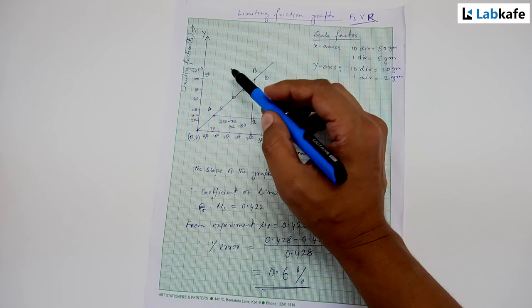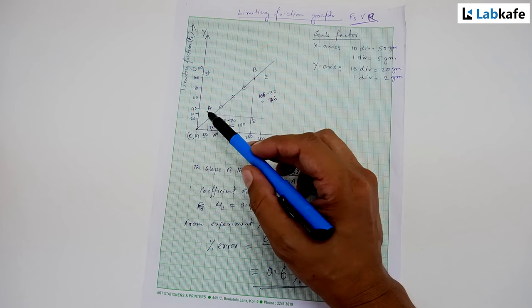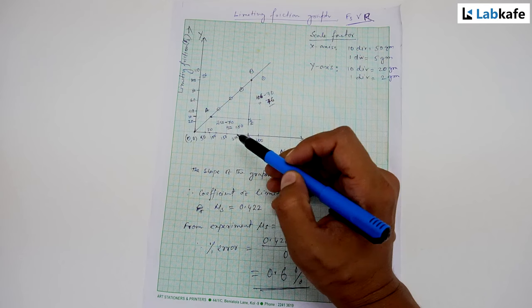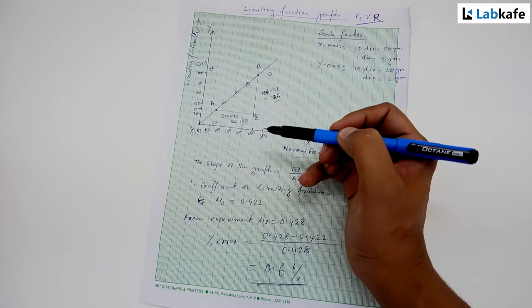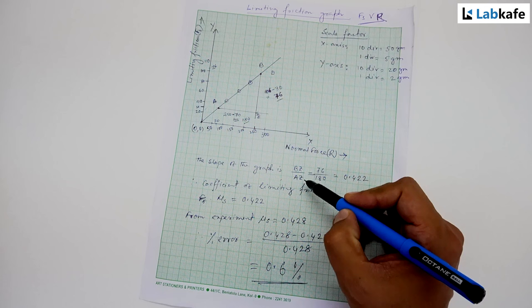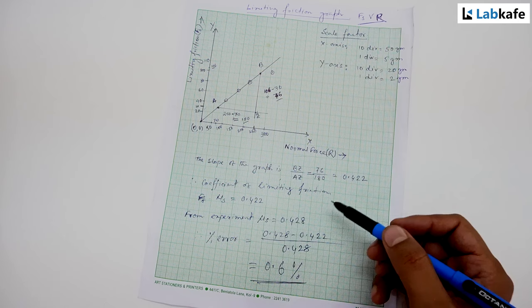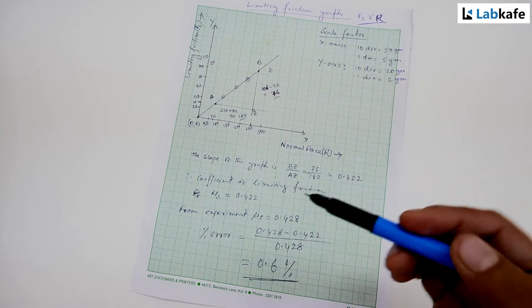From the graph, B is at 106 and Z is at 30 on the y-axis. 106 minus 30 equals 76, therefore BZ is 76. Similarly, A is at 70 and Z is at 250 on x-axis, so 250 minus 70 equals 180. Hence the slope of the graph is BZ by AZ equals 76 by 180, which equals 0.422. From the graph, the coefficient of limiting friction μs equals 0.422.